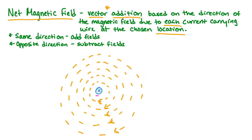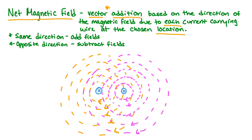Recall from earlier that a current-carrying wire directed into the screen will have a magnetic field with concentric circles directed clockwise around the wire. Now let's set up an identical current-carrying wire right next to it. We have drawn a second current-carrying wire to the right of the first and represented the magnetic field with pink dotted lines. If we draw a horizontal line that goes through both current-carrying wires, we can then analyze positions where the magnetic fields overlap to determine whether there is a larger or smaller net magnetic field. Let's go through the labeled positions 1, 2, and 3 and determine whether we should add or subtract our fields.